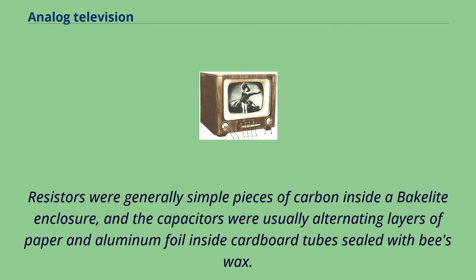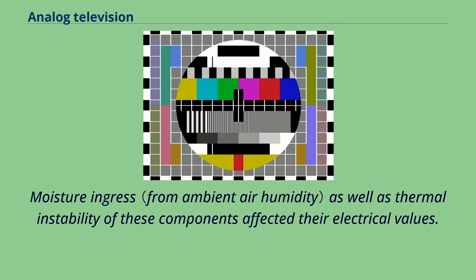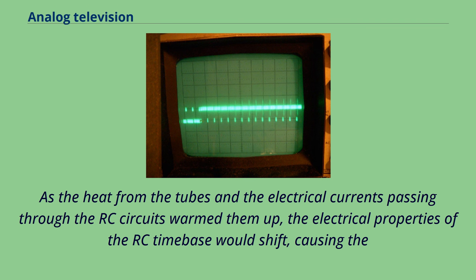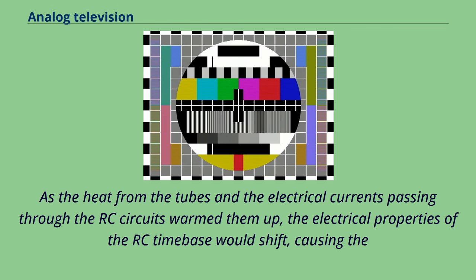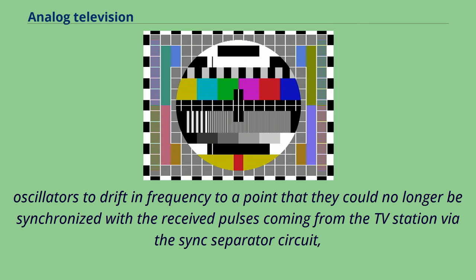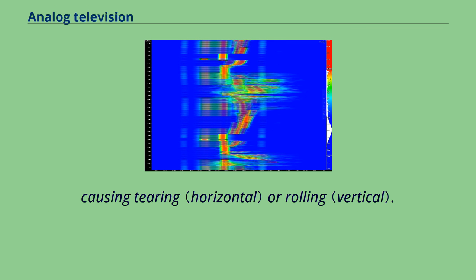Hermetically sealed passive components and cooler running semiconductors as active components gradually improved reliability to the point where the horizontal hold was moved to the rear of the set first, and the vertical hold control persisted as a front panel control well into the 1970s. By the early 1980s the efficacy of the synchronization circuits, plus the inherent stability of the set's oscillators, had been improved to the point where these controls were no longer necessary.